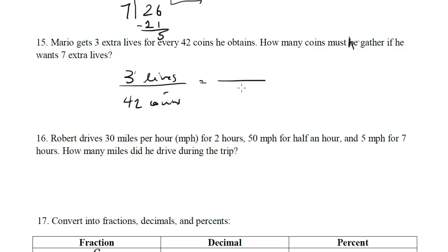Remember top and bottom have got to be the same. So we want to get 7 lives, and we want to know how many coins, so that's x. Now we just cross multiply. We get 3x equals 7 times 42.